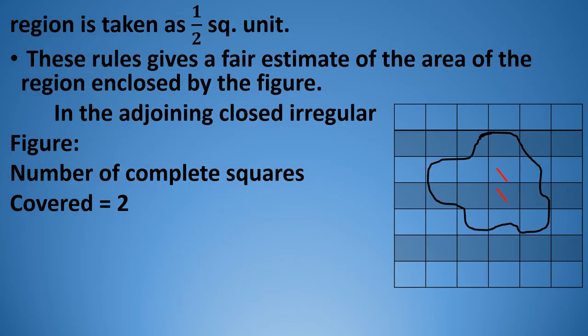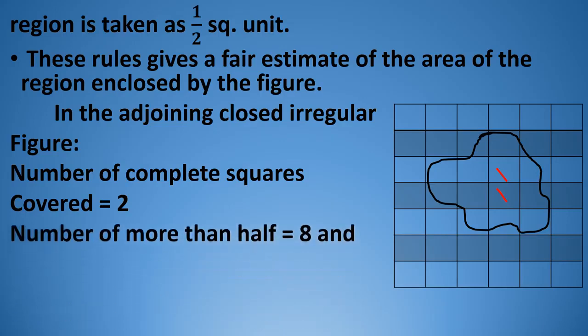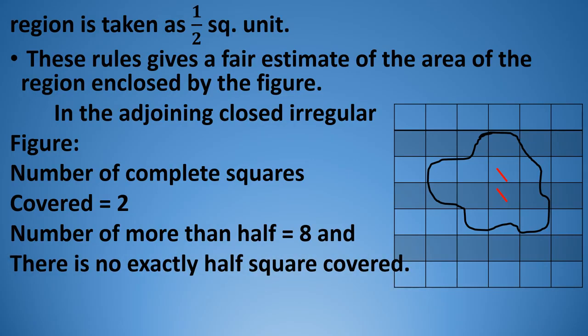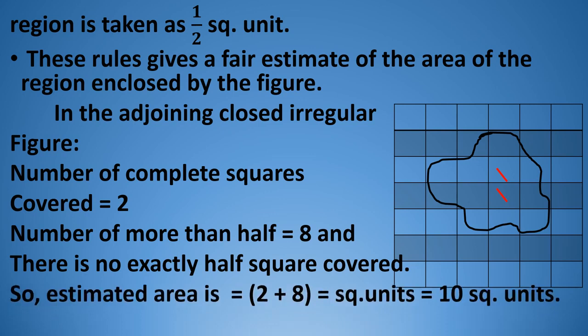Now we have to count the number of squares covered more than half — they are eight in number. Less than half we ignore. How many squares are exactly half? There is no exactly half square covered. So our area is 2 plus 8, that is 10 square units. If the unit is meters, then it is square meters; if it is centimeters, then it is square centimeters.